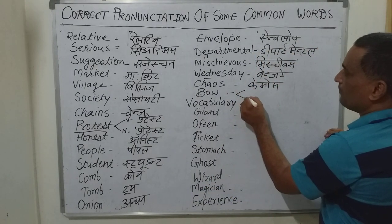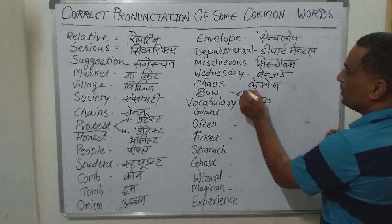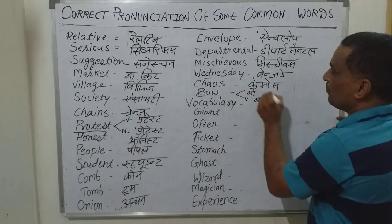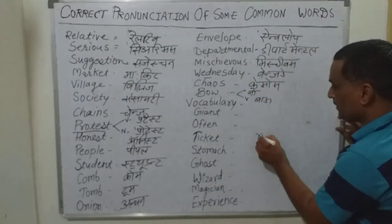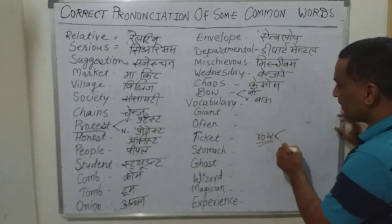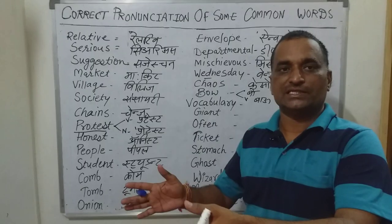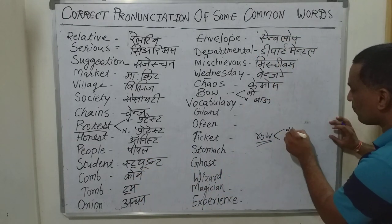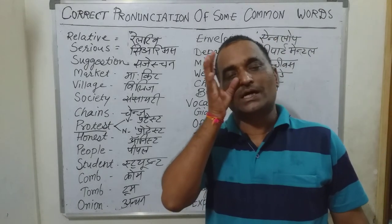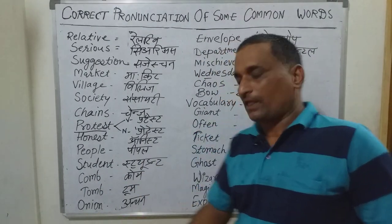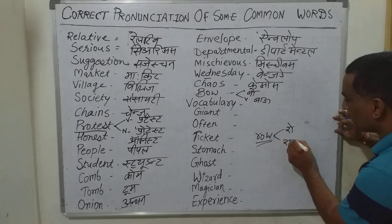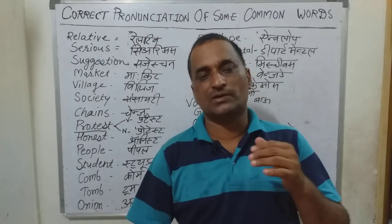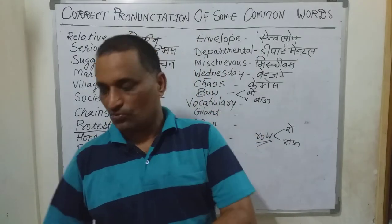The next word is 'bow' — when used in one sense it is pronounced 'bow,' and in another sense it is pronounced 'bow.' Similarly, 'row': when used to mean a line, as in 'He was standing in a row,' it is pronounced 'row.' But when it means a quarrel or disturbance, it is pronounced 'row,' as in 'It takes two to make a row.'